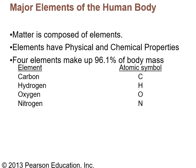Elements have physical properties and chemical properties. Physical properties are like whether they're shiny or dull, solid or liquid, or if they have an odor. Chemical properties are like whether they're combustible or flammable, or whether they react with other things. So elements do have those types of properties.